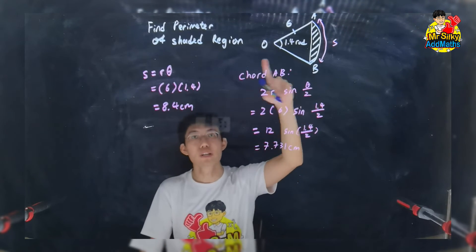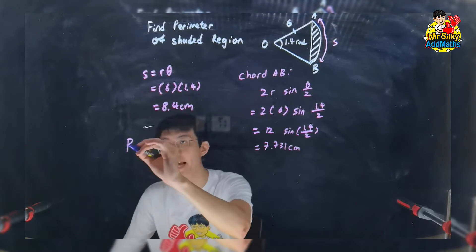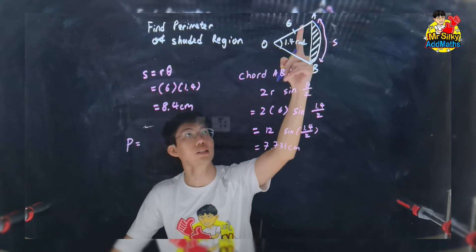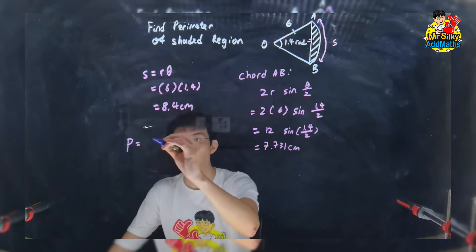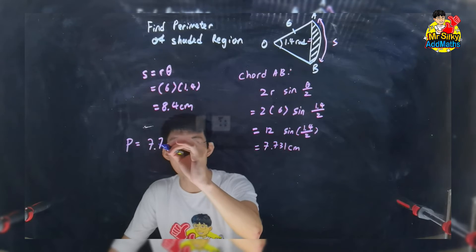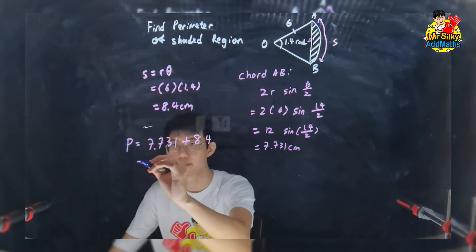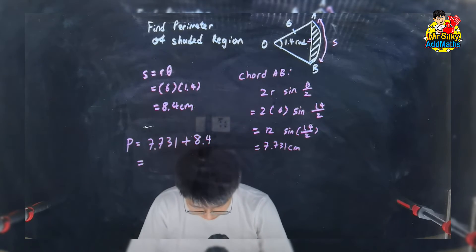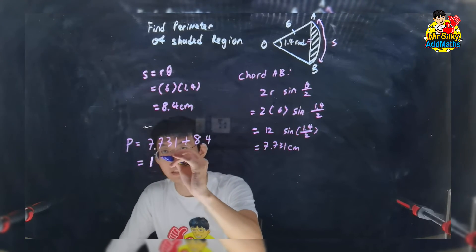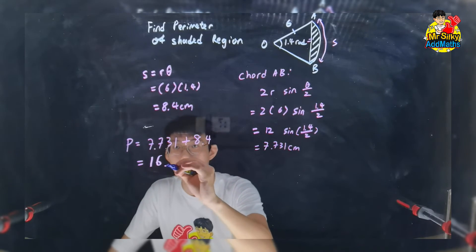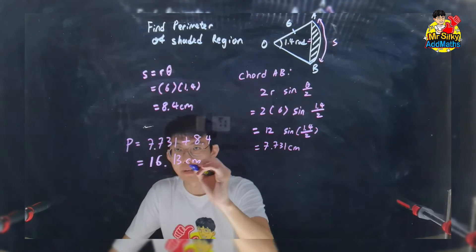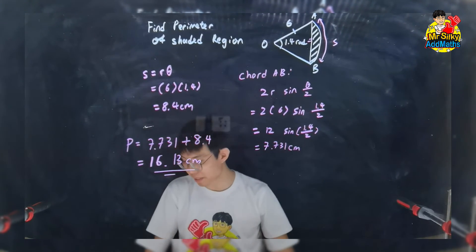Alright, so in order to finalize the perimeter, we are using the chord, this chord here. So 7.731 plus with the arc. Alright, so we plus together and basically I will get 16.13 cm. That's my perimeter.